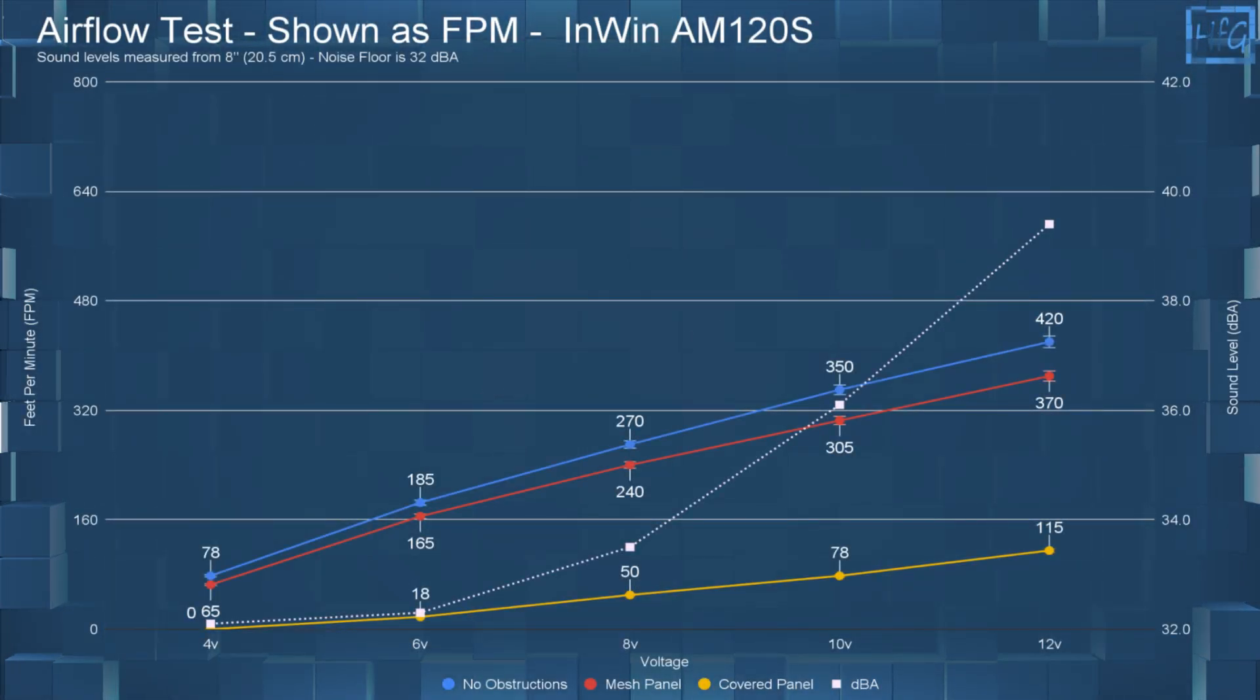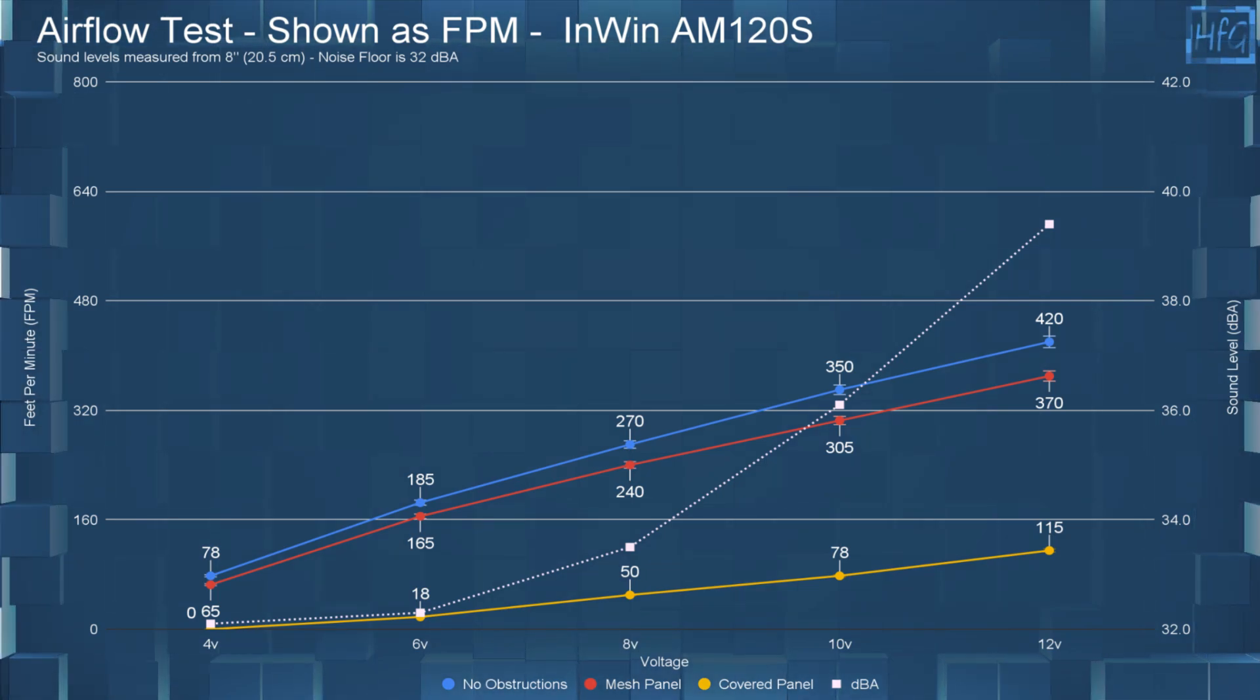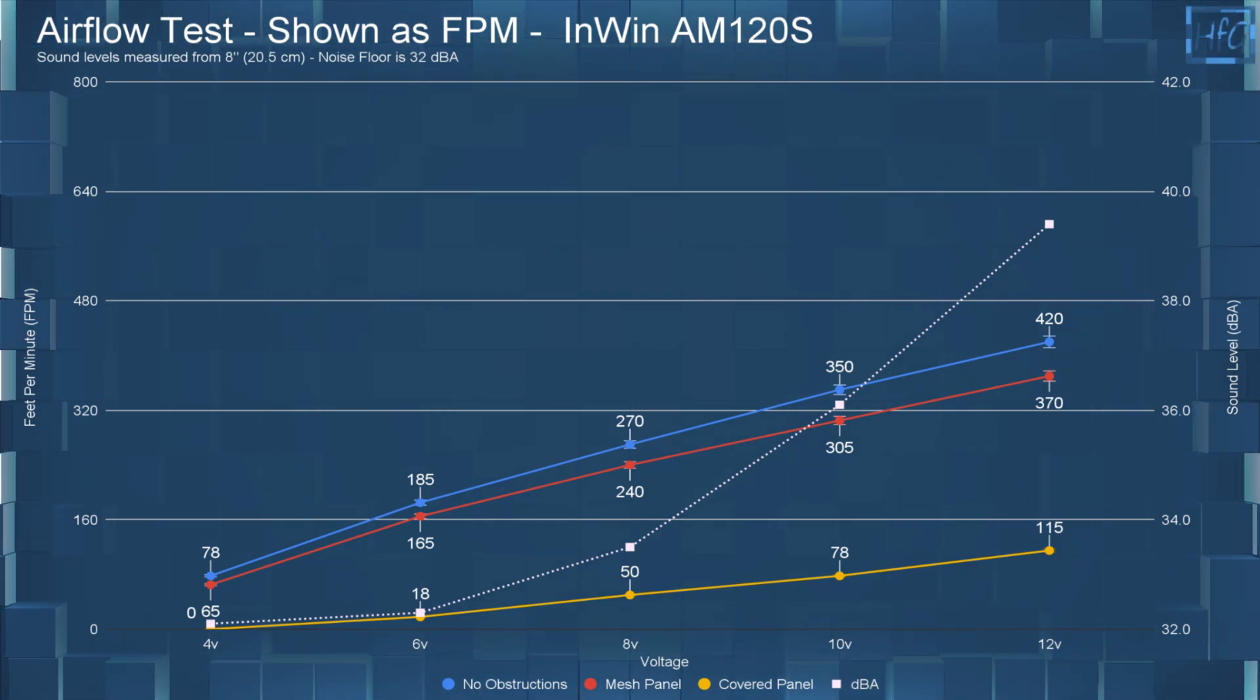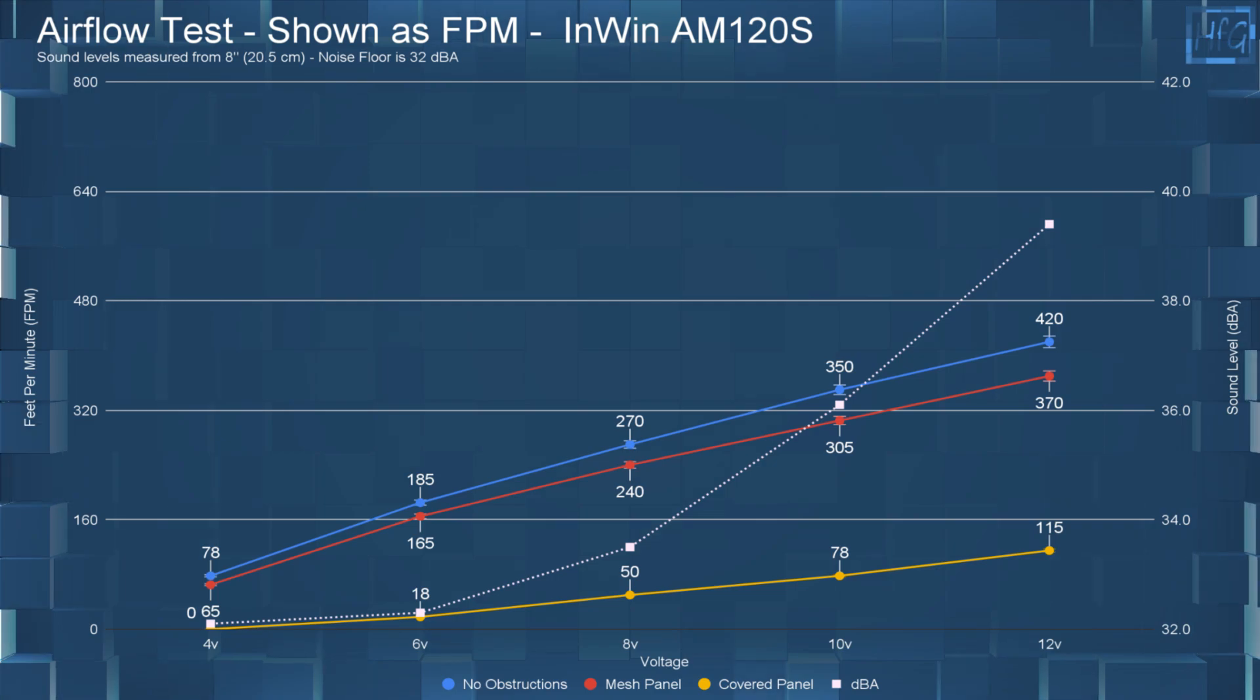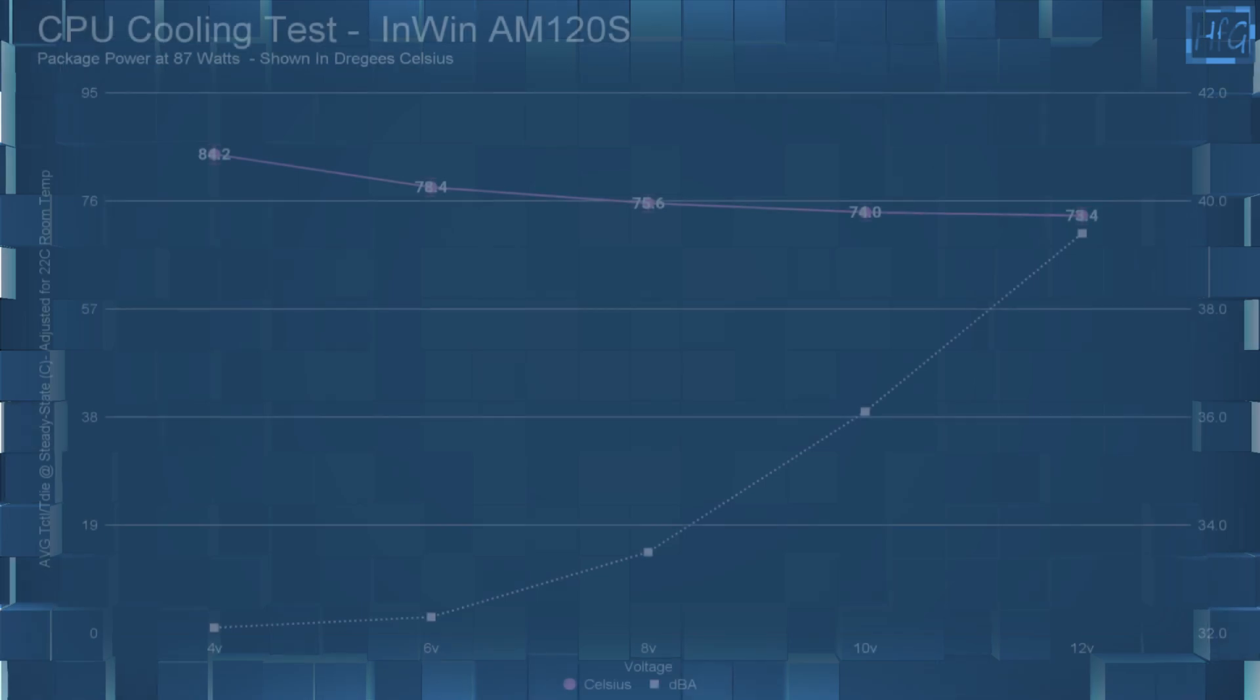Now, for the airflow chart. I left the DBA numbers up on the chart for a few minutes for your reference. At 4 volts, with no obstructions, it had an RPM of 78. With the mesh panel, it had an RPM of 65. And with the cover panel, it had an RPM of 0. Now jumping up to 12 volts to save some time. With no obstructions, it had an RPM of 420. With the mesh panel, it had an RPM of 370. And with the cover panel, it had an RPM of 115. That's it for the airflow.